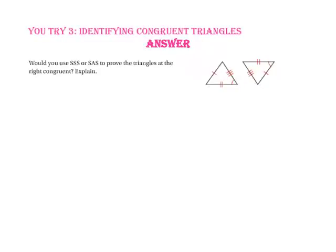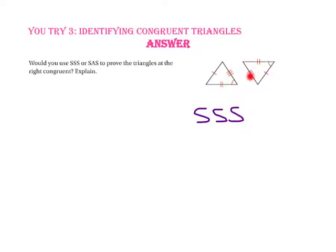Pause the video and do you try number three. Would you use side-side-side or side-angle-side to prove the triangles congruent? We have three sides congruent to three sides, so we can definitely use side-side-side. Let's also check for side-angle-side: since this angle is included between the side with two marks and the side with three marks, we need the corresponding angle between the two-mark and three-mark sides of the other triangle. Since that corresponding angle is not congruent to this one, we cannot use side-angle-side.